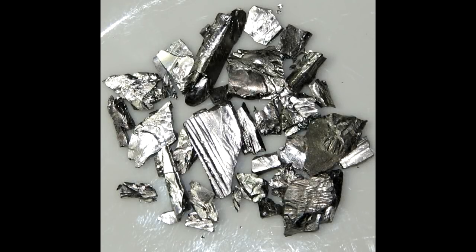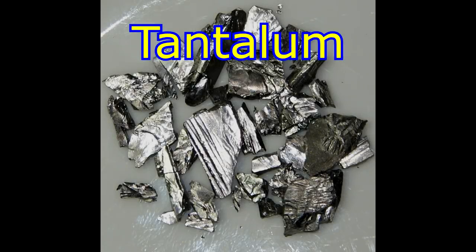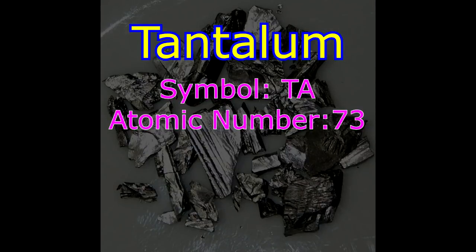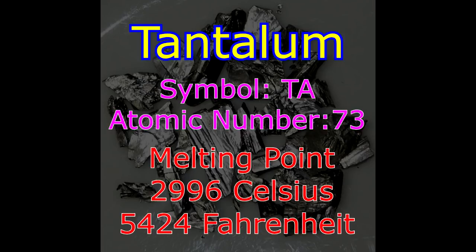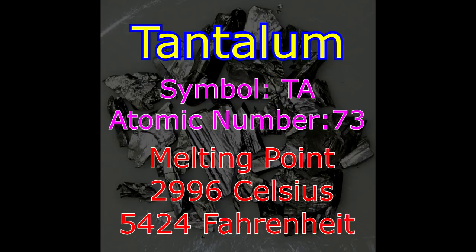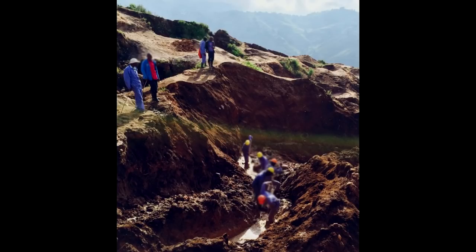This is a picture of Tantalum. Tantalum is on the periodic table and its symbol is TA. The atomic number is 73. Tantalum has a melting point of 2,996 degrees Celsius or 5,424 degrees Fahrenheit. This picture of Tantalum mining was taken by the government in the DRC.